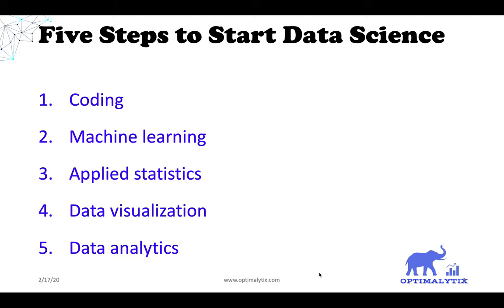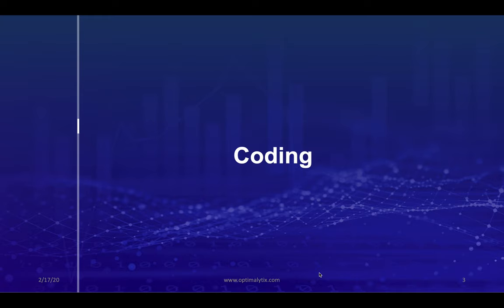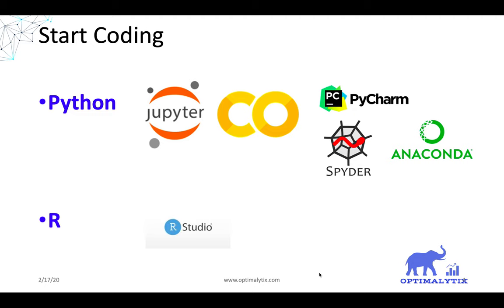Step number five: data analytics — learn about elements of data analytics. For coding, you can do Python or R. If you want to do R, you should use RStudio, but I strongly suggest that you use Python and focus on Python.